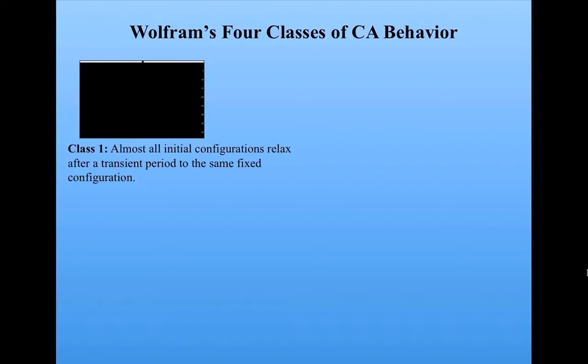Class 1: almost all initial configurations relax after a transient period to the same fixed configuration. A transient period is a period before the cellular automaton settles down into an attractor-like pattern.